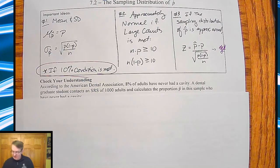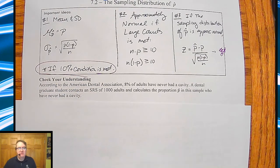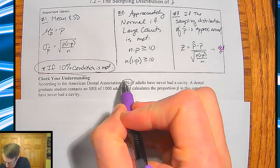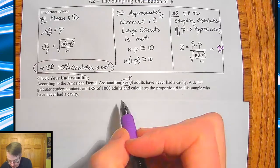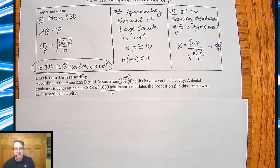So we're going to talk about cavities here. In a second, go ahead and pause this, go through the questions and then come on back. Hey, all right. So here's the problem. According to the American Dental Association, 8% of adults have never had a cavity. I wish I was one of them. A dental graduate student contacts a simple random sample of a thousand adults and calculates a proportion of p hat in the sample who never had a cavity. A couple things to note. Here is your p value, and then here is your n value.